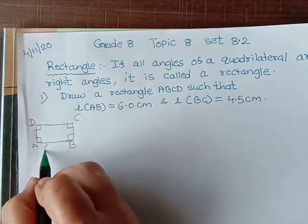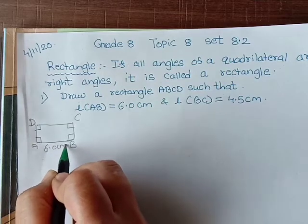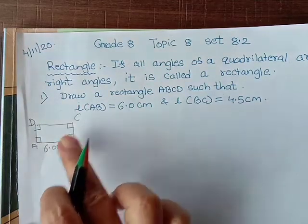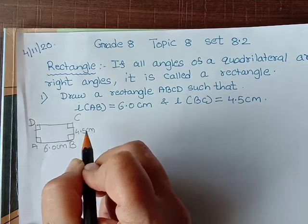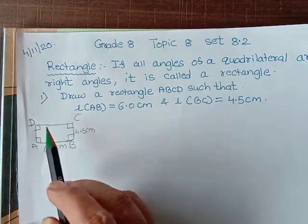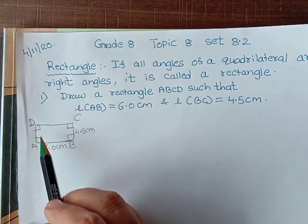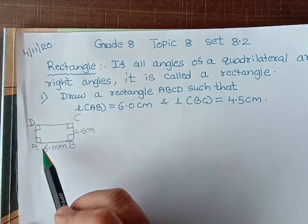What is AB? 6.0 centimeter, that means 6 centimeter. BC is 4.5 centimeter. Now apart from this, you need to understand what is measure of CD and what is measure of AD. You know that opposite sides of rectangle, they are equal.